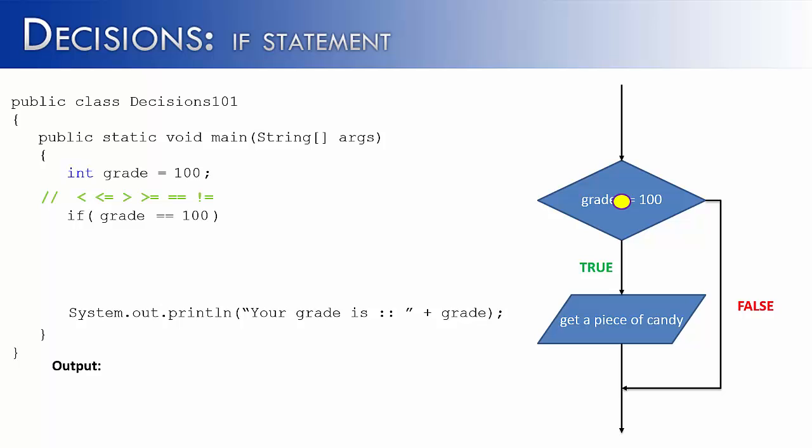Now that I have my if statement written, I want to say what happens if that's true? It's going to say you get a piece of candy. In this case, because the person did make 100 on their exam, they would get a piece of candy. And then just like everyone else, it would print out their grade saying it is 100.